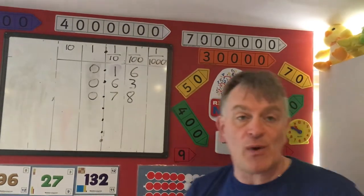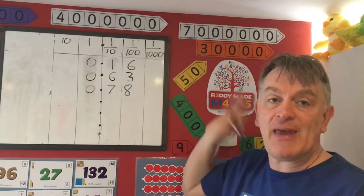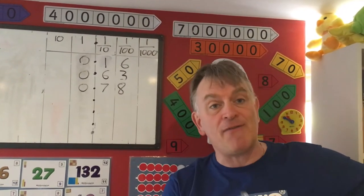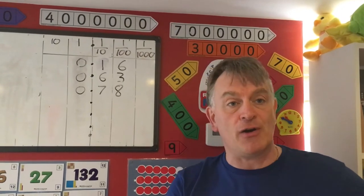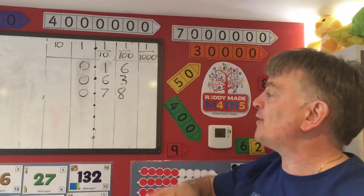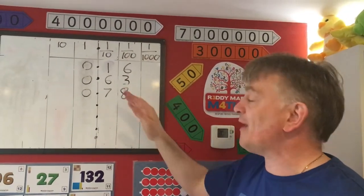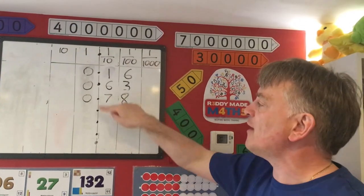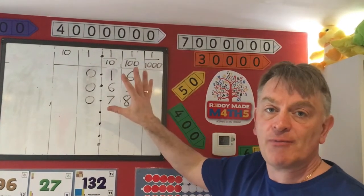You can see how when you've done it practically, this all suddenly makes sense. You've taken everything done on the table or desk or in a group, put it onto a board, and we can make sense of it — seven tenths and eight hundredths, seventy-eight hundredths.